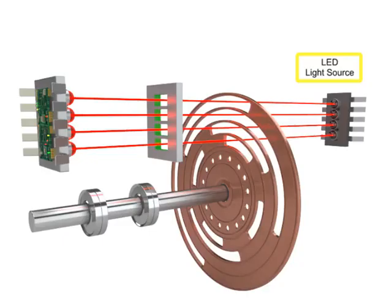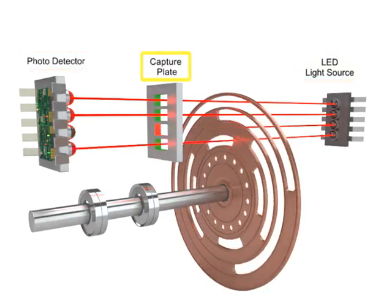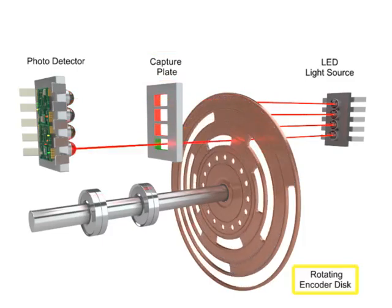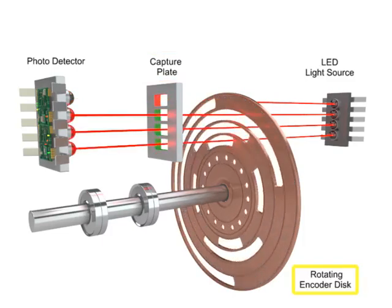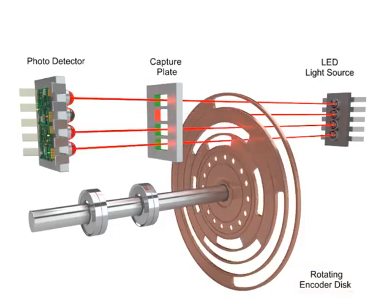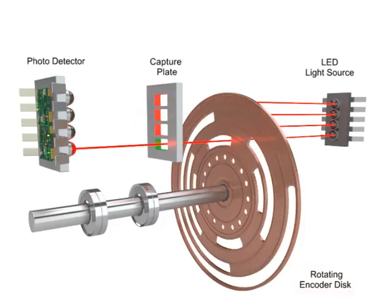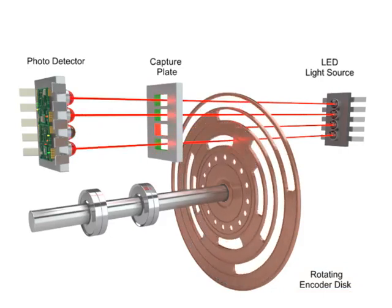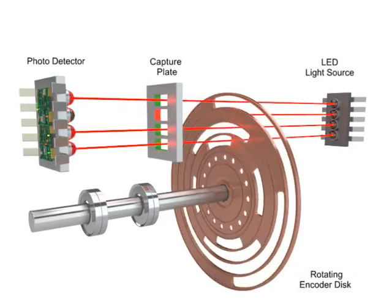A light source located on the opposite side of the photocells passes light through a capture plate. As the encoder disc rotates, light is either transmitted or blocked according to the pattern. The received light provides a four-bit word that indicates the position of the actuator or device the encoder is mounted to.